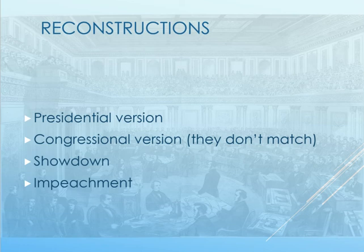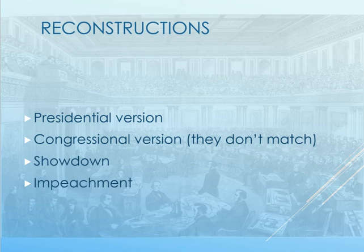The 14th Amendment also reduces the representation of any southern state that denies the right to vote to certain people. In 1870, they went even further with the 15th Amendment, which gives voting rights to black men. They also attempted to confiscate and redistribute plantations to freedmen, though that was eventually defeated. They then divided the South into military districts, because the South had returned, in many cases, to states of de facto slavery.